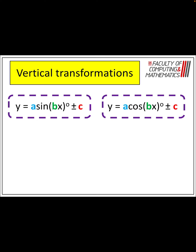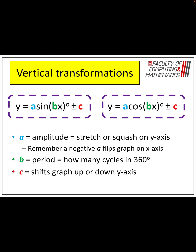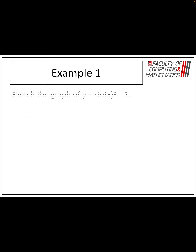Now, vertical transformation — this is where we're going to move the entire graph up and down the y-axis. So the amplitude A at the front squashes or stretches it, the B will tell you the period of the graph and how many cycles there are in 360 degrees, and that C at the end shifts the graph up and down the y-axis.